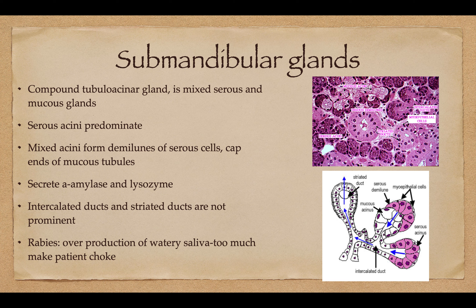The submandibular glands are below the jaw, and it's a mixed serous and mucous gland — mostly serous, though. The mixed acini have a little cap on them, which is a demilune of myoepithelial cells, and those also secrete amylase and lysozyme. They secrete down through the intralobular ducts into the interlobular ducts, and then are released through the striated ducts. There aren't as many intercalated and striated ducts as in the parotid gland. In cases of rabies, there's an overproduction of watery saliva, which causes the frothing of the mouth.